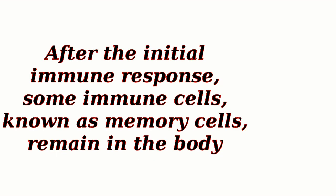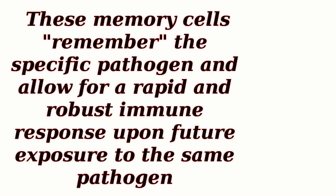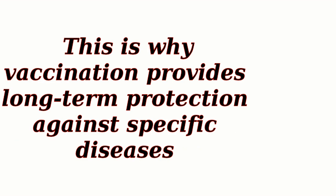After the initial immune response, some immune cells, known as memory cells, remain in the body. These memory cells remember the specific pathogen and allow for a rapid and robust immune response upon future exposure to the same pathogen. This is why vaccination provides long-term protection against specific diseases.